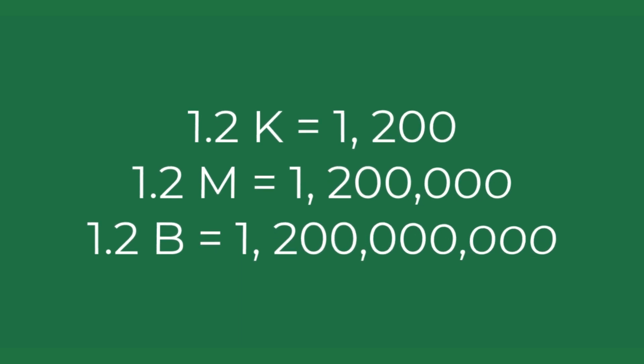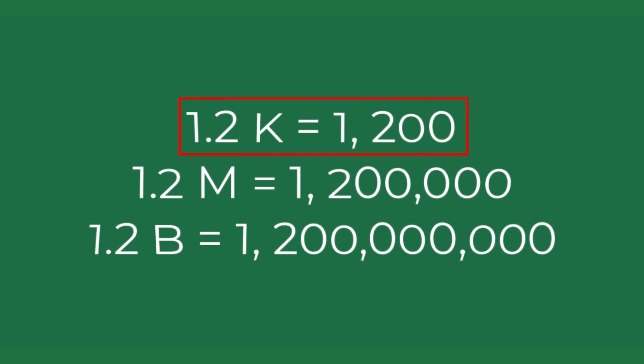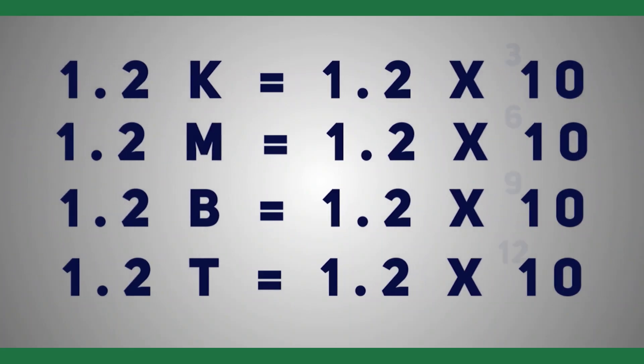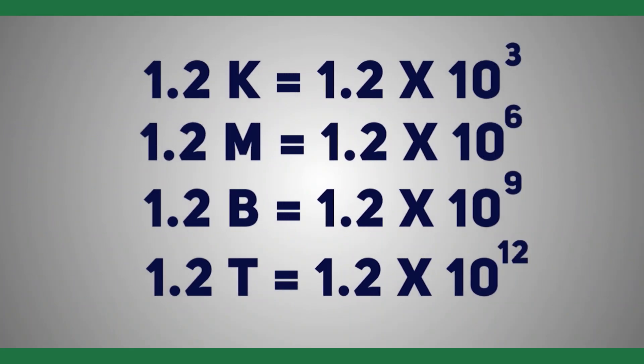For example, the number like 1.2K means 1200, 1.2M means one hundred and twenty thousand, and so on. It is obvious that the powers of ten will decide the number value, whether it is thousand, million, or billion.